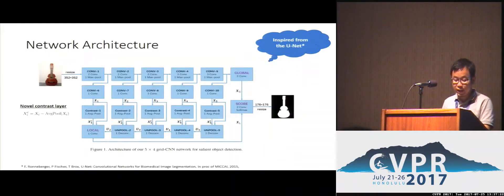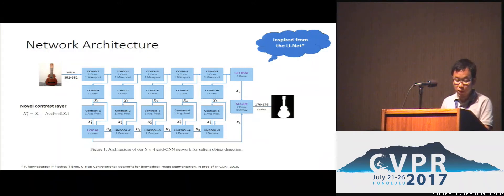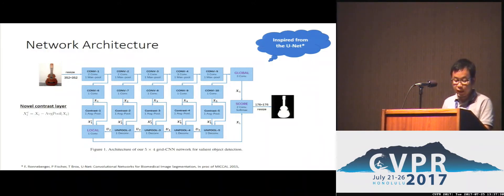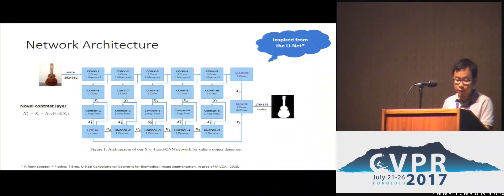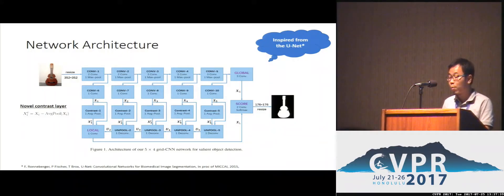A 4x5 grid CNN architecture inspired from the U-Net model is proposed to compute the saliency map by fusing global and local features, and a novel contrast layer is proposed to capture the contrast information. Notice that our model does not use any super-pixel nor CRF, which makes our model much faster.